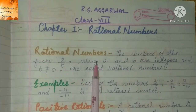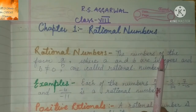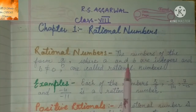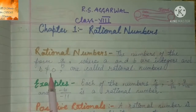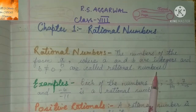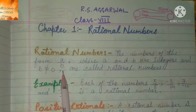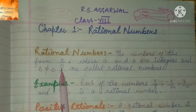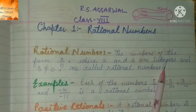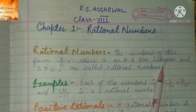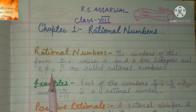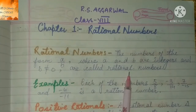So Rational Numbers क्या होते हैं? वो हम देख लेते हैं. The numbers of the form A upon B, where A and B are integers and B not equals to 0, are called Rational Numbers. यानि कि जो A upon B की form में होते हैं, means it has numerator and denominator, जहाँ पर A और B कोई भी integer हो सकते हैं — means positive या negative numbers हो सकते हैं, including 0. But जो B है, यानि कि जो हमारा denominator है, वो 0 के equal नहीं होना चाहिए. ऐसे ही numbers को हम Rational Numbers कहते हैं.